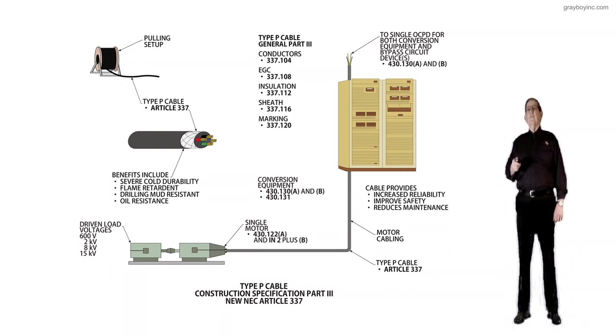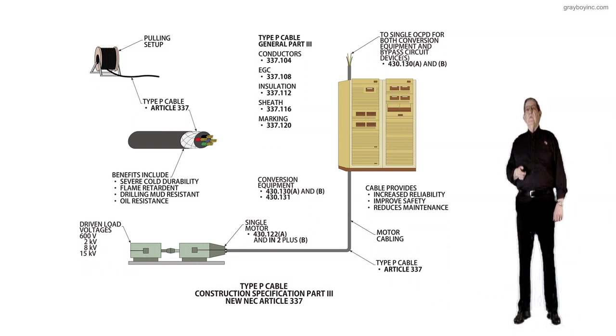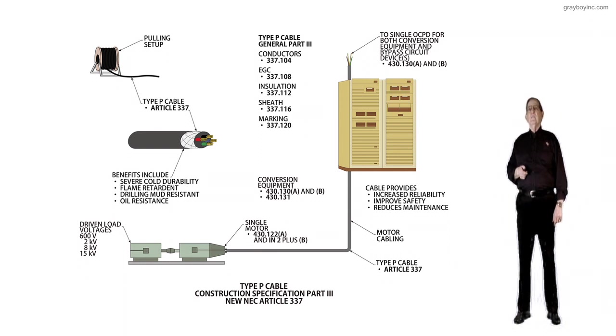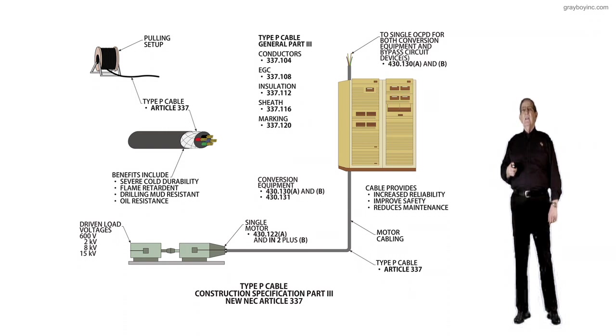And notice the conductors, if we want to know about the conductors inside the Type P Cable, we'd go to 337.104. If we were interested in the equipment ground and the requirements for it, we'd go to 337.108. The insulation that would be surrounding the conductor, and then you'd have the outer jacket and everything, 337.112. And then the sheath is 337.116. And then the marking required on the cable so we can identify it is 337.120.